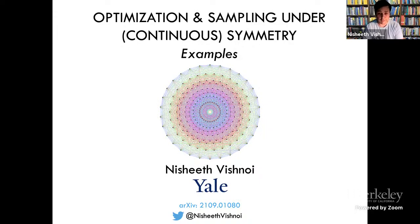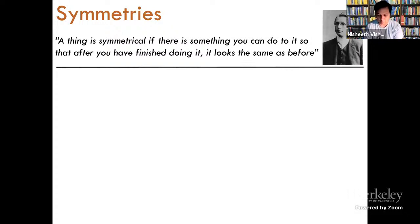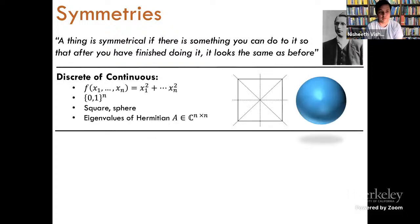So a lot of details which I might skip or Jonathan might skip would be there in these notes. So what are symmetries? Humans have been fascinated with symmetries for a very long time. I'll just use a quote from Herman Weyl, which succinctly summarizes symmetries: 'A thing is symmetrical if there is something you can do to it, so that after you're finished doing it, it looks the same as before.'